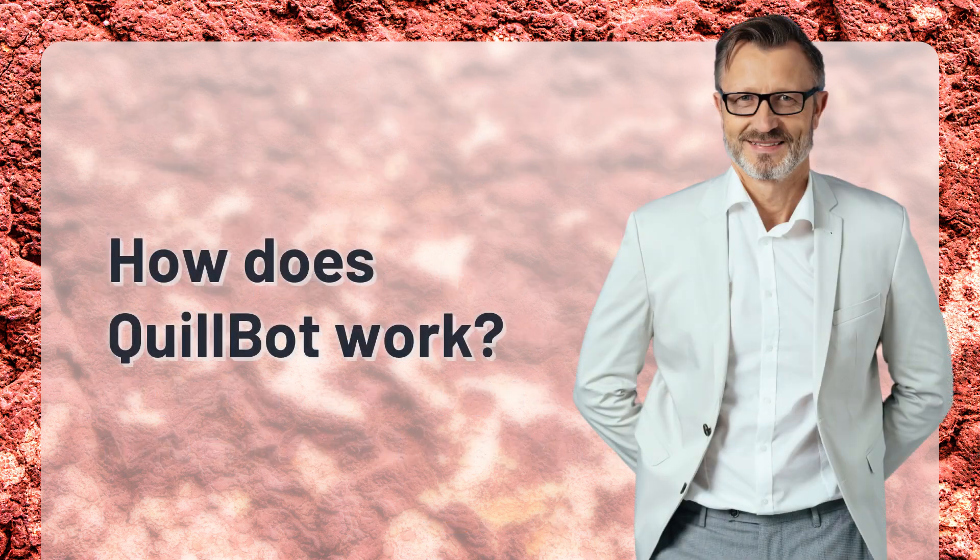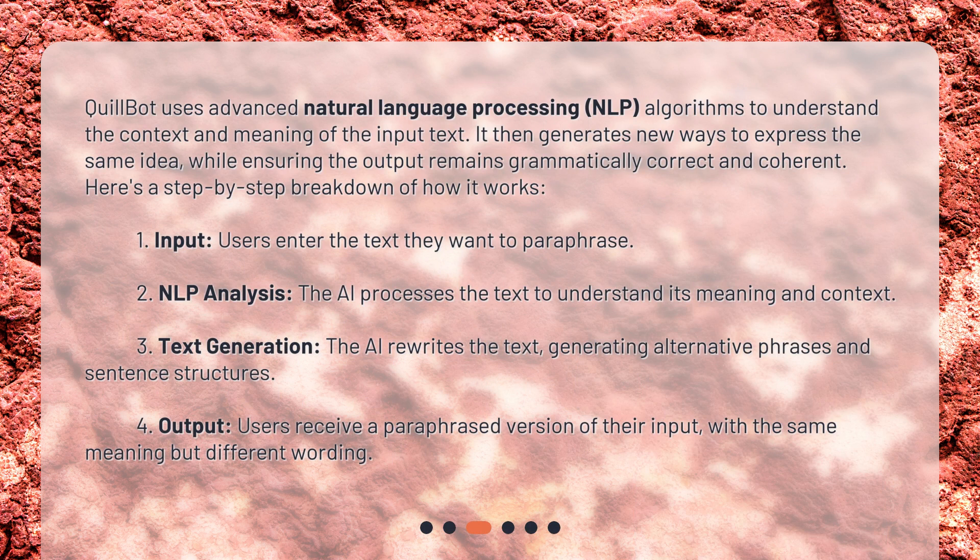How does Quillbot work? Quillbot uses advanced natural language processing algorithms to understand the context and meaning of the input text. It then generates new ways to express the same idea, while ensuring the output remains grammatically correct and coherent.